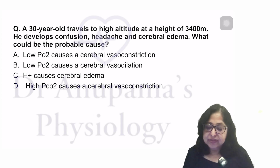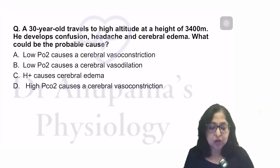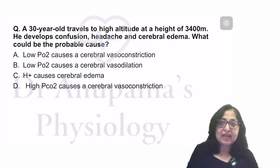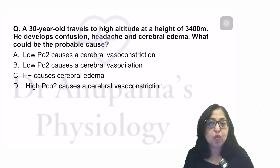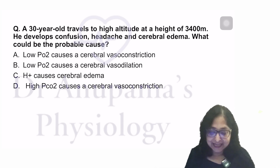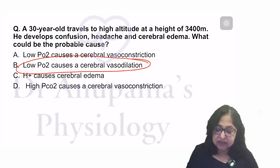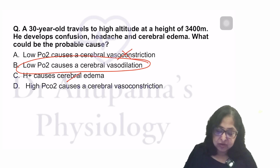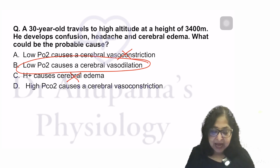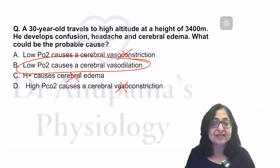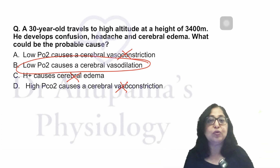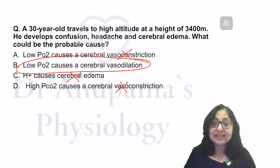A 30-year-old travels to high altitude at 3,400 meters and develops confusion, headache, and cerebral edema. What is the probable cause? At high altitude, low PO2 in the atmosphere causes cerebral vasodilation, which is responsible for the headache. Low PO2 does not cause cerebral vasoconstriction. H-plus cannot cross the blood-brain barrier and does not cause cerebral edema. High PCO2 causes cerebral vasodilation, not vasoconstriction. The answer is that low PO2 causes cerebral vasodilation, which in turn causes the headache.